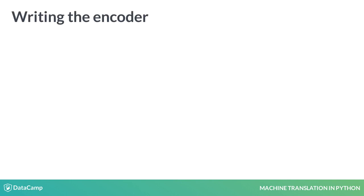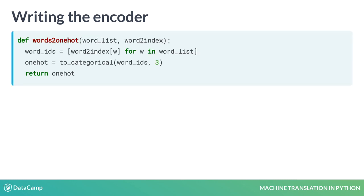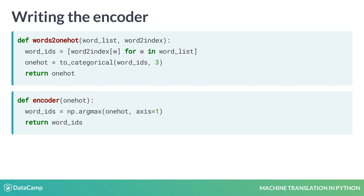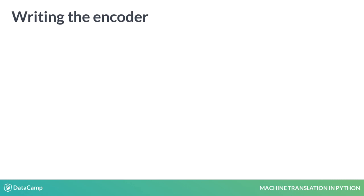In order to implement the encoder, you will first implement a function called words-to-one-hot, which will convert a given list of words to one-hot vectors. The resulting one-hot vector will have the shape: number of words by num_classes. Num classes is 3 in our example. The encoder function is a simple function that takes in an array of one-hot vectors as the argument and returns the word IDs corresponding to the one-hot vectors.